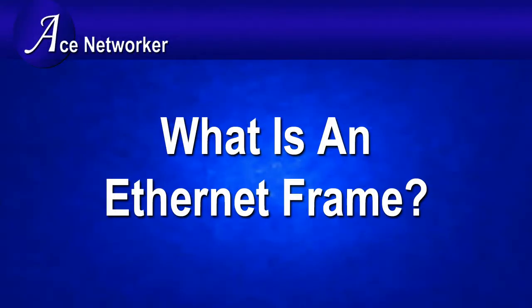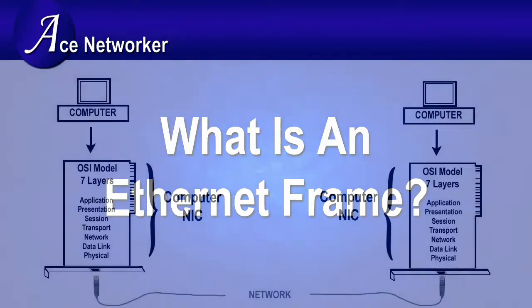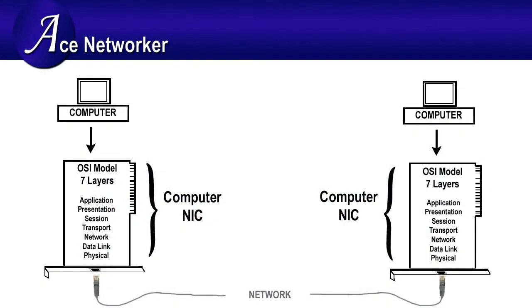Every technology used on a network breaks the data transmitted between computers into smaller pieces called frames. The network interface cards, or NICs, on a network computer system function at layer 2 of the OSI model, the data link layer.